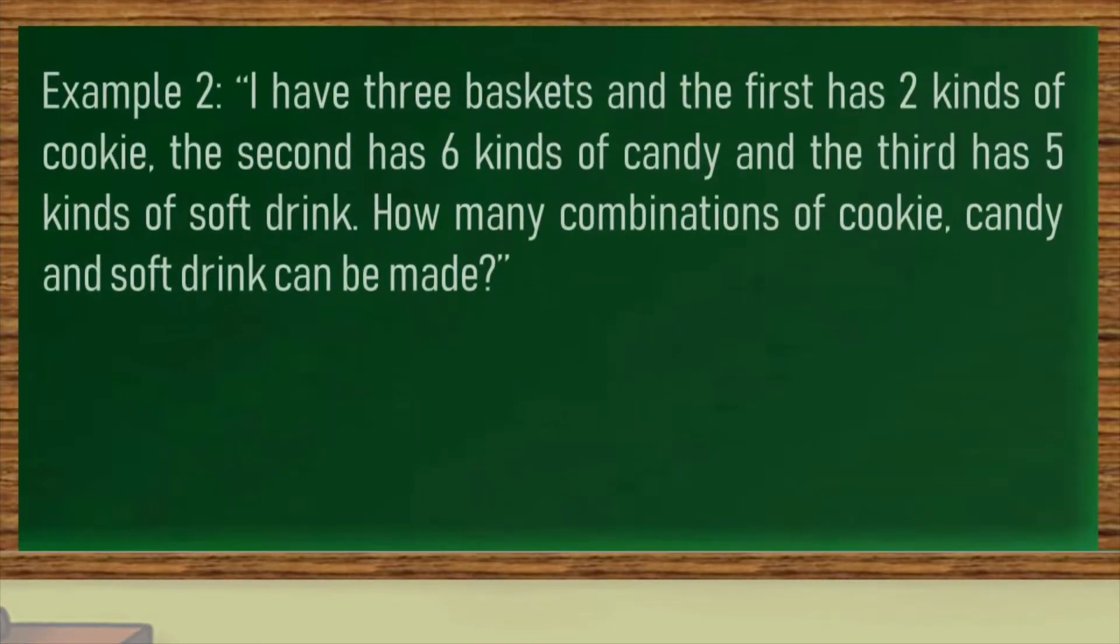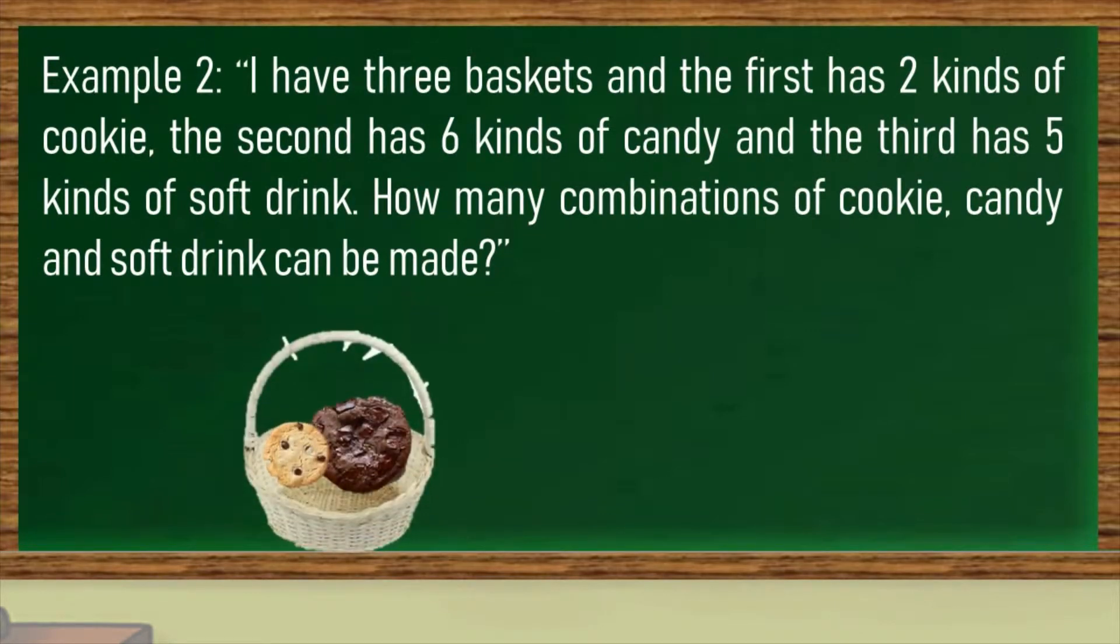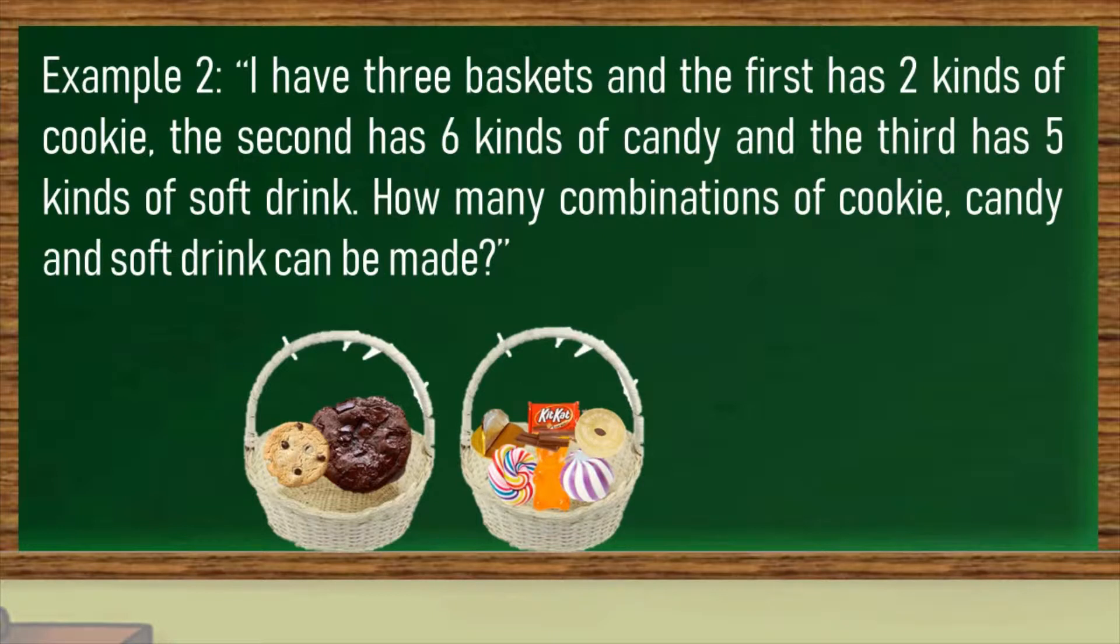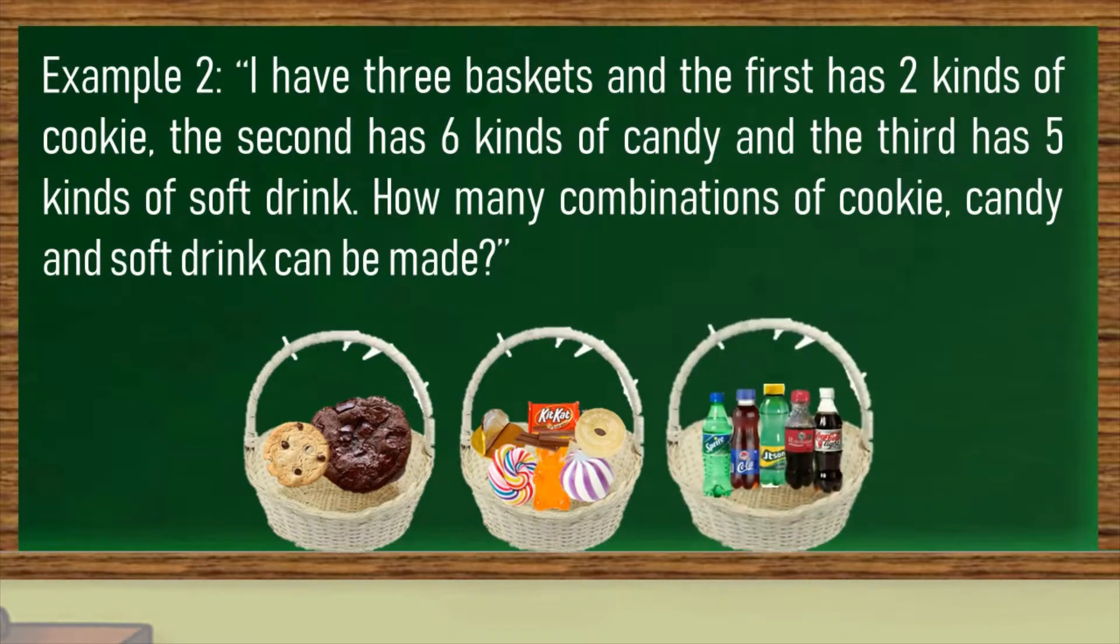Let us have another example. I have three baskets. The first has two kinds of cookie, the second has six kinds of candy, and the third has five kinds of soft drink. How many combinations of cookie, candy, and soft drink can be made? Let's follow again the steps.